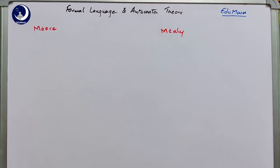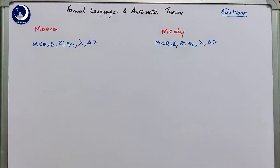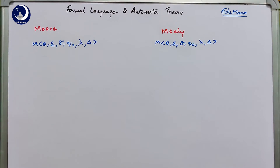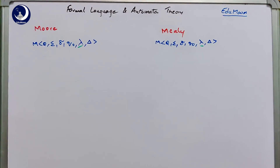The tuples for both machines are Q, sigma, delta, Q, lambda, and small delta. Both machines share the same tuples and there is no capital F (the set of finite states) because these two machines are used for generating an output rather than accepting a string or a language. The difference between these two machines is given by the lambda function, called the output function.